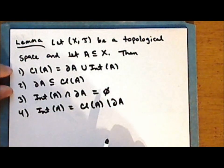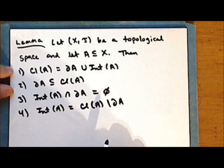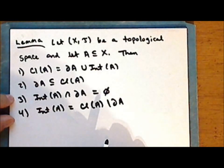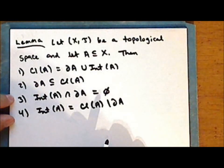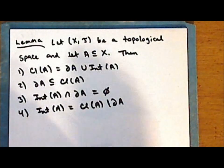Notice that the first two statements essentially state that the closure of a set contains the boundary of the set, and statements three and four essentially state that the interior of a set does not contain the boundary of the set.